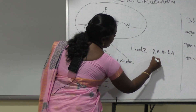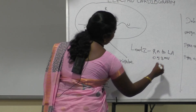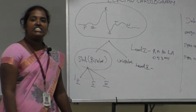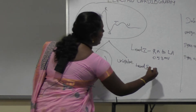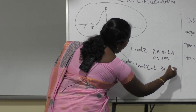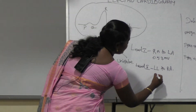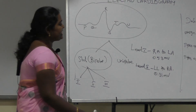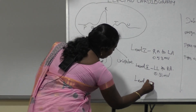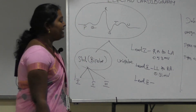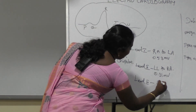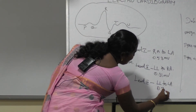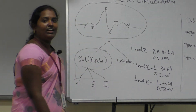The voltage range for Lead 1 is 0.5 millivolts. For Lead 2, the electrode potentials are measured between the left leg and the right arm, with a voltage level of 0.31 millivolts. For Lead 3, the electrode potentials are measured between the left leg and the left arm, with a voltage level of 0.78 millivolts.